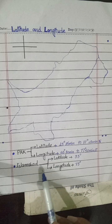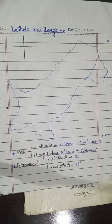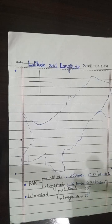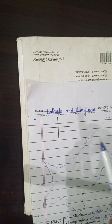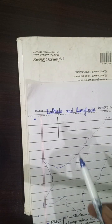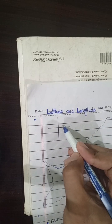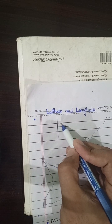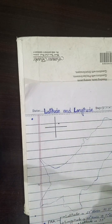The central latitude and longitude of Pakistan is 33 degrees and 73 degrees respectively. Pakistan is located in the northern and eastern hemisphere on the world map.